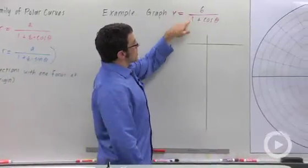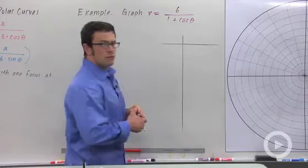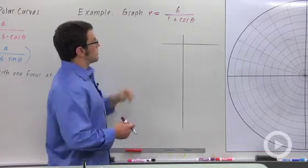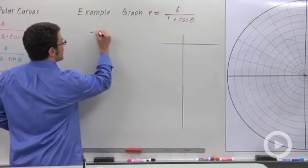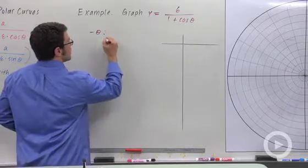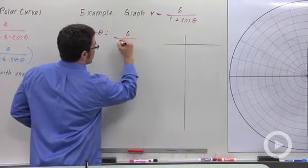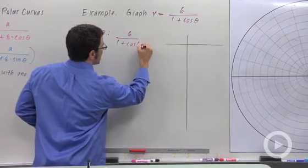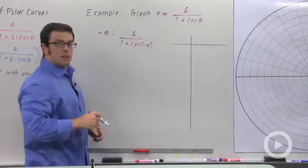r equals 6 over 1 plus cosine theta. First, I want to find if there's any symmetry with this graph. So I'm going to plug in negative theta, and I get 6 over 1 plus cosine negative theta. Cosine's even,